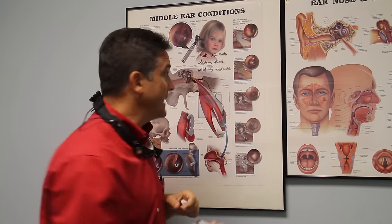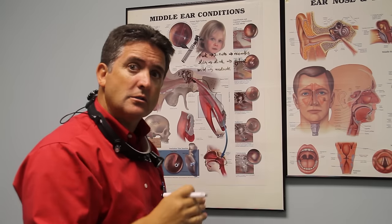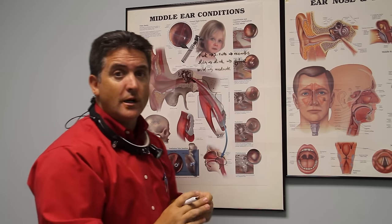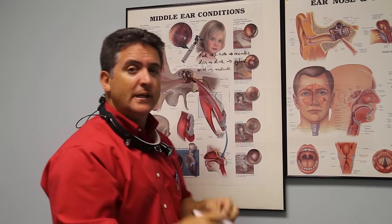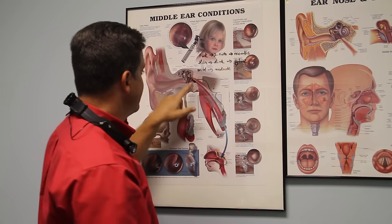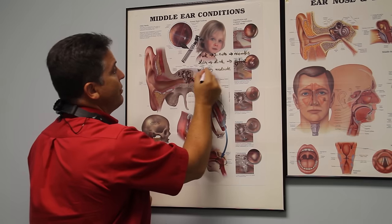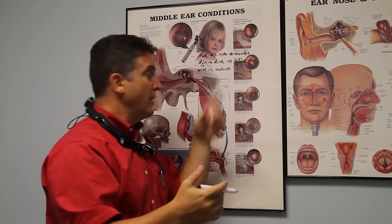In some cases, that fluid will sit there for a long time — months. And when that fluid sits there for months, it turns into something that literally is the thickness of glue. So we start with thin fluid, then thick fluid — more like syrup — and then finally glue, like that old glue from elementary school that you had to squeeze out of the bottle. When we get to the glue stage, it's not draining down through the eustachian tube. Our best chance of draining it on our own is when it's thin. The longer it sits there, the thicker it gets.